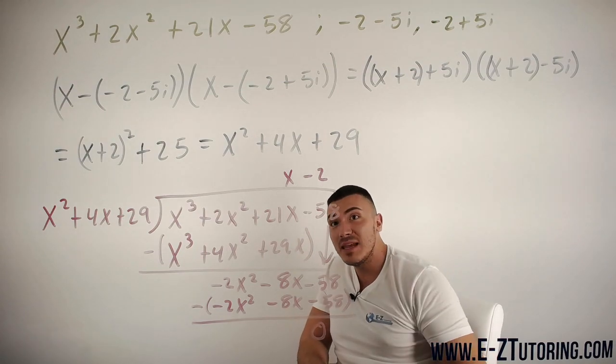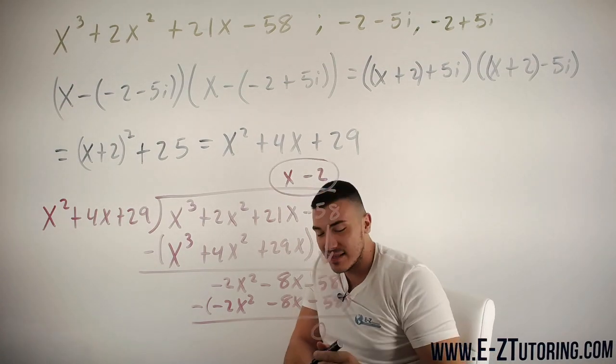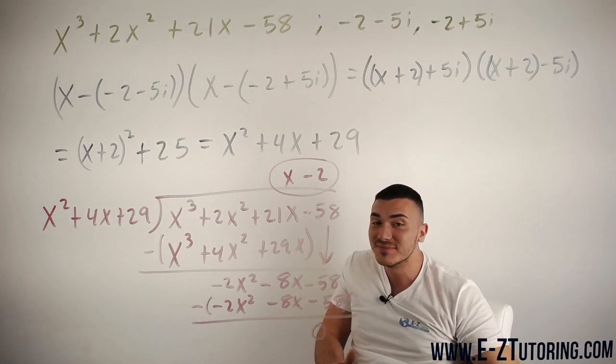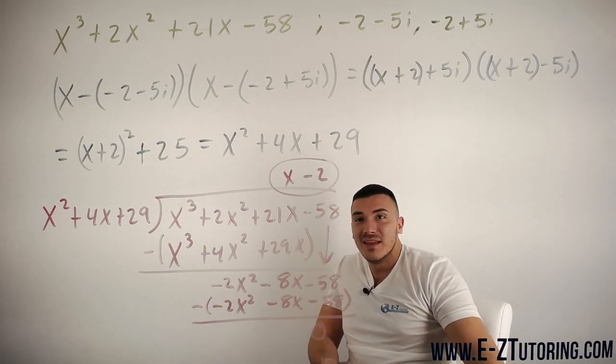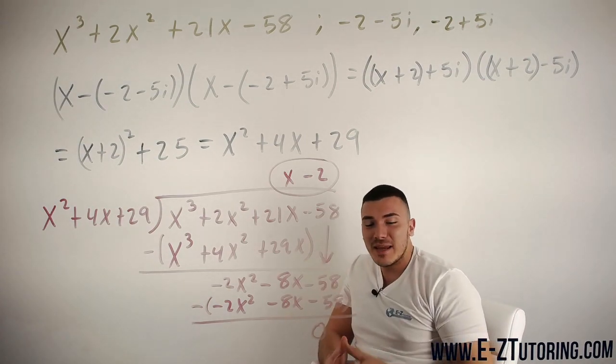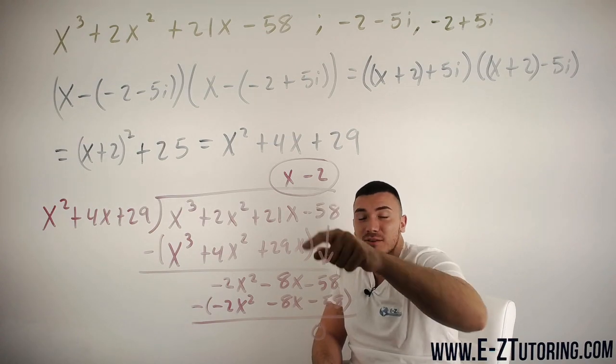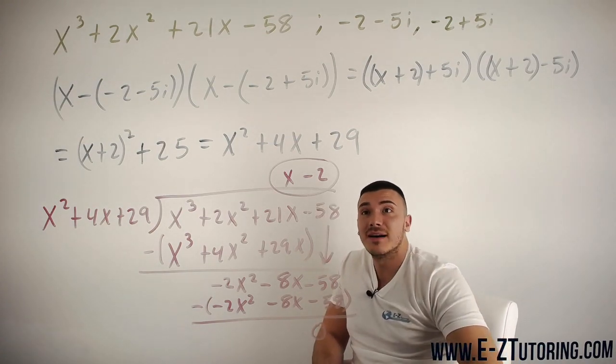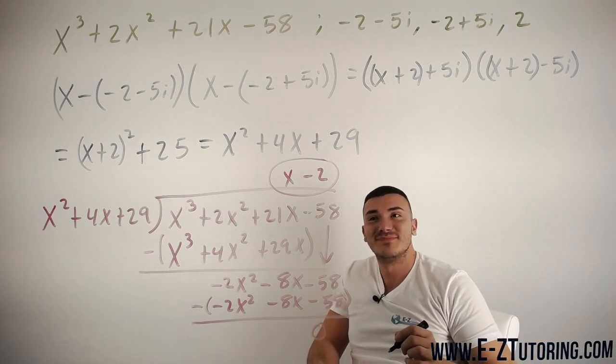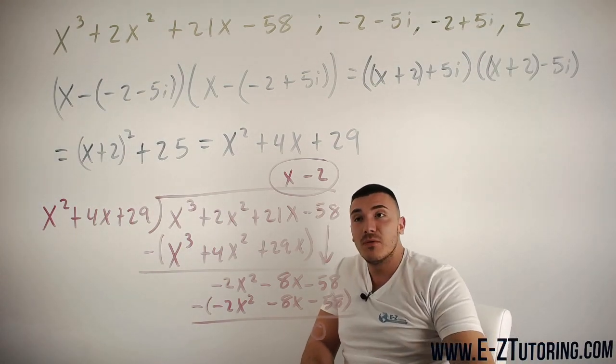And that means that this is our last factor. This is the last root that we were looking for. So from here, you can find your remaining root. All you do is take x-2 and set it equal to 0. And when you set it equal to 0, you will get that x equals 2.